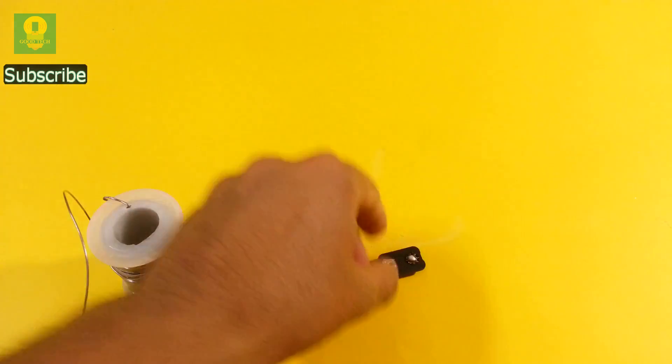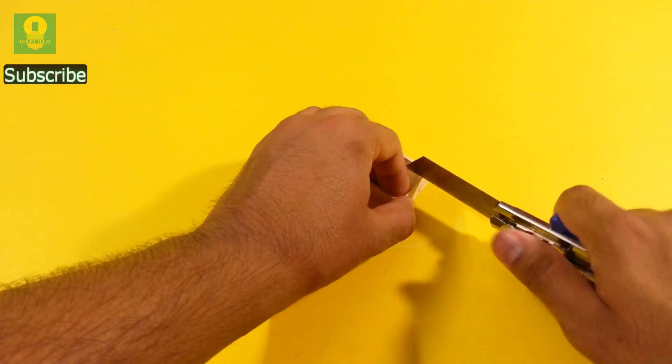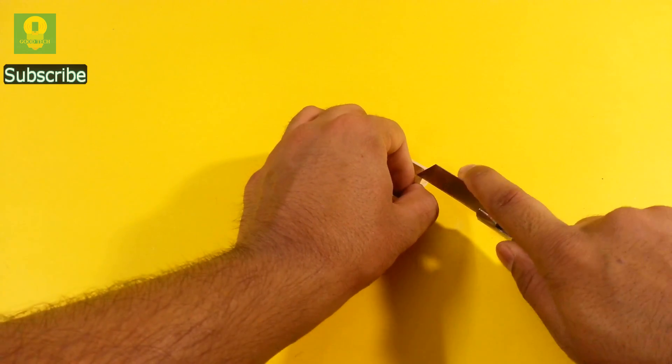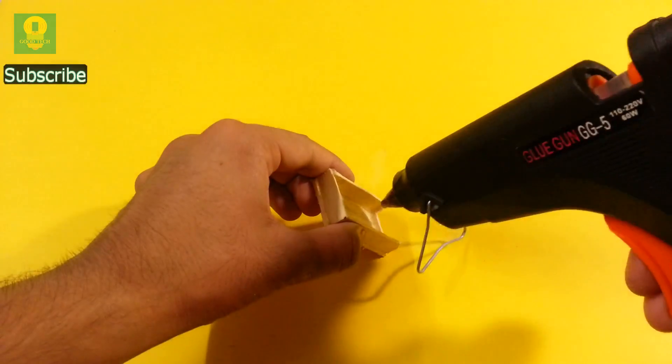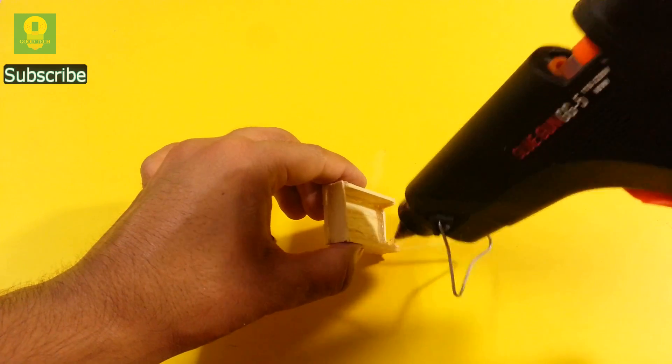We need to paste the connector in the holder. For that, cut a slit at one of the sides. Now paste the connector at the edge using hot glue.